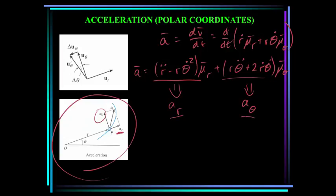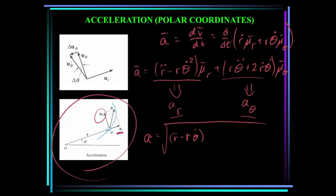The transverse component is a sub theta in the u sub theta direction. The magnitude of the acceleration is of course the square root of (r-double-dot minus r times theta-dot squared) squared plus (r times theta-double-dot plus 2 times r-dot times theta-dot) squared.